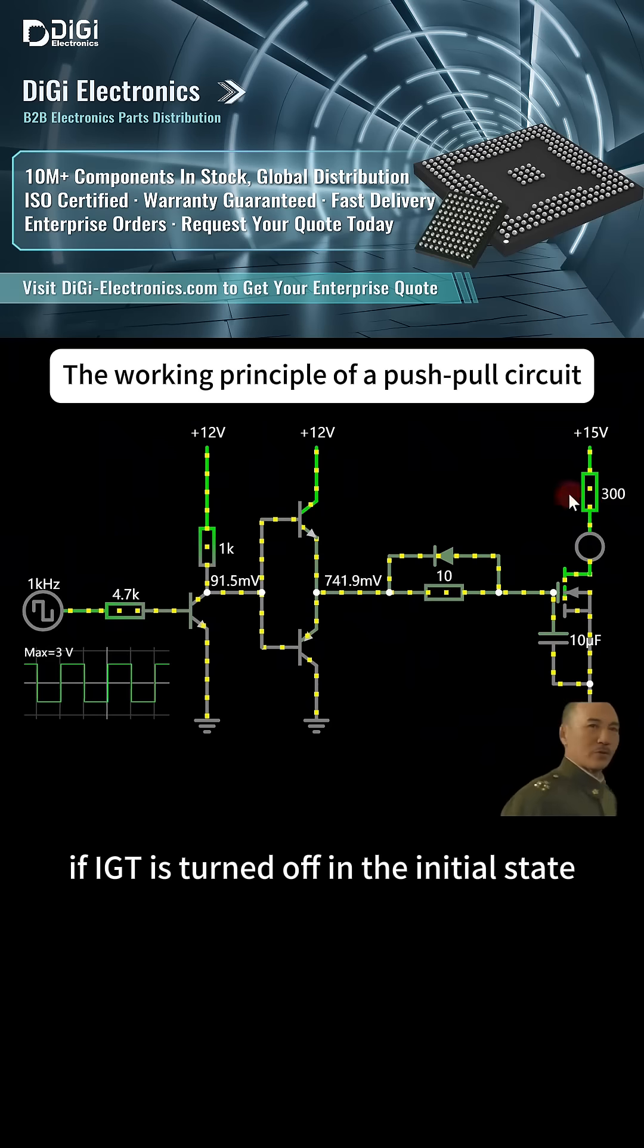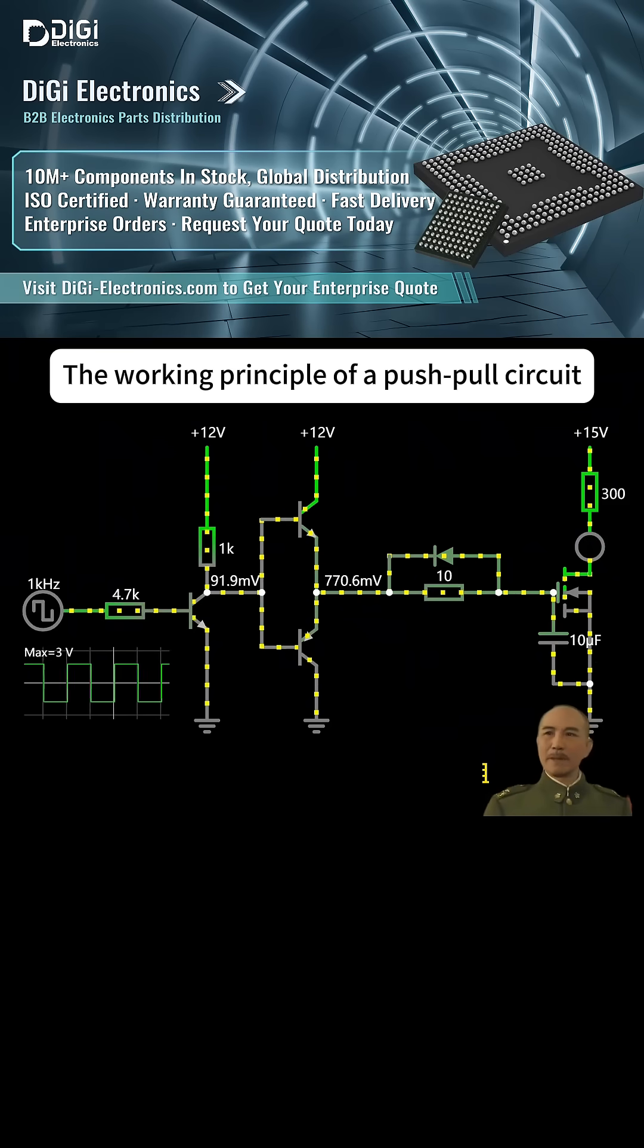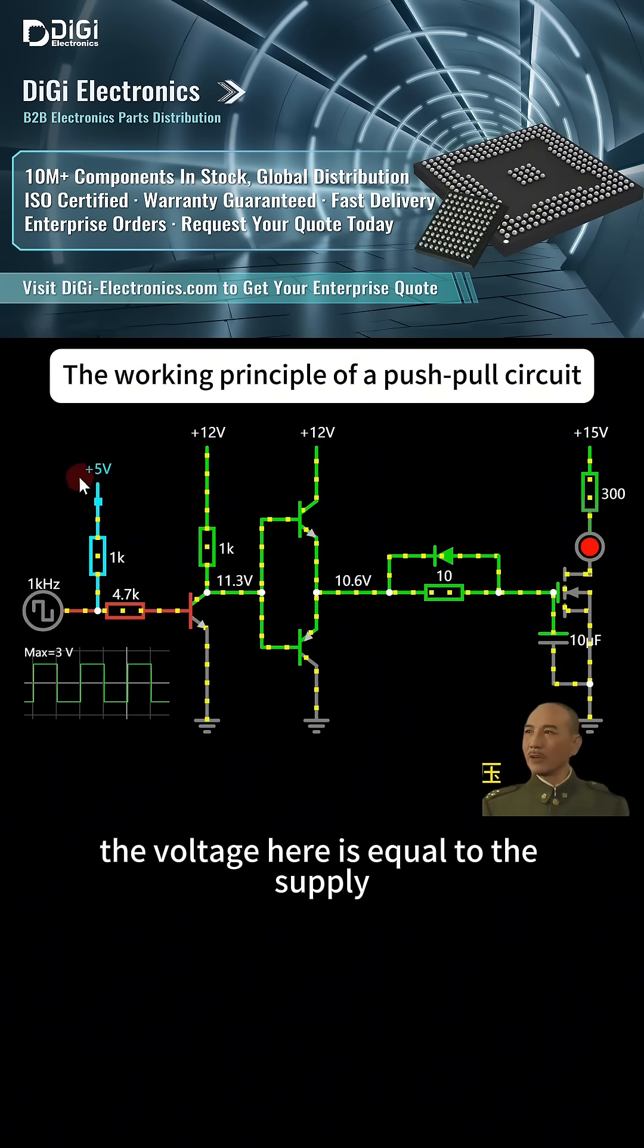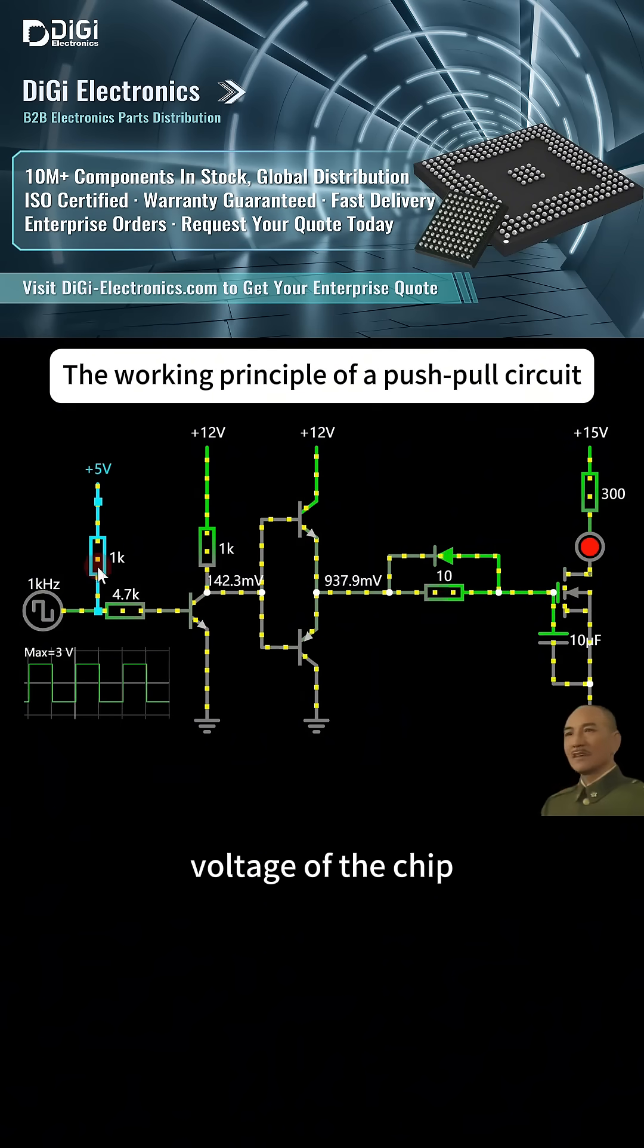If IGBT is turned off in the initial state, you can put a pull-up resistor at the front end of it. The voltage here equals the supply voltage of the chip, 3 volts or 5 volts.